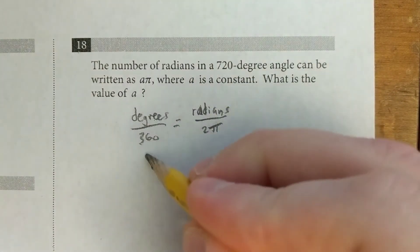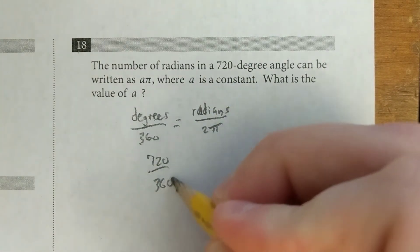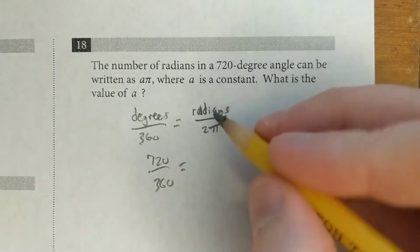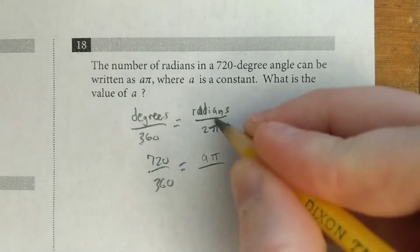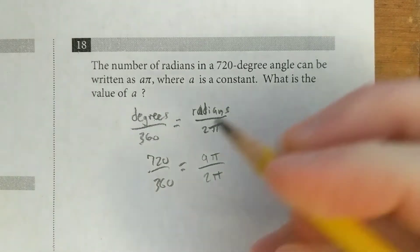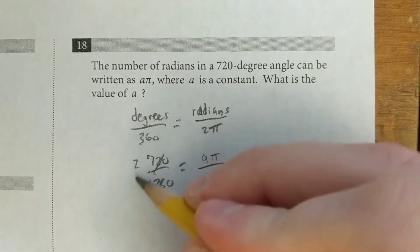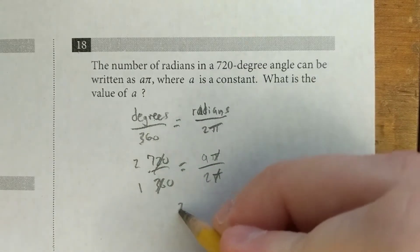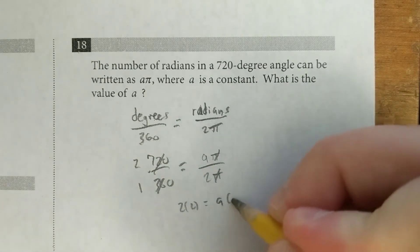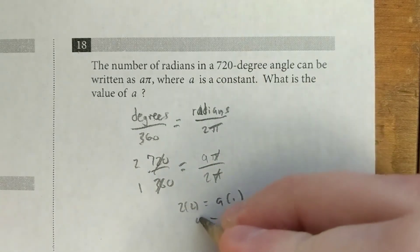So in this case we've got a 720 degree angle, so 720 over 360. We're trying to find the radians. They say that the radians are a pi, so we're going to put that there, and we know they're always out of 2 pi, and we can cancel here. It's like 2 over 1, cancel the pi's, cross multiply, we've got 2 times 2 equals a times 1, and that means that a equals 4.